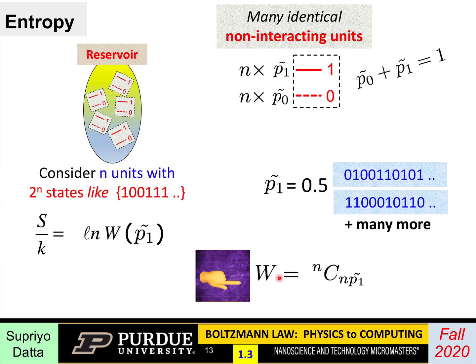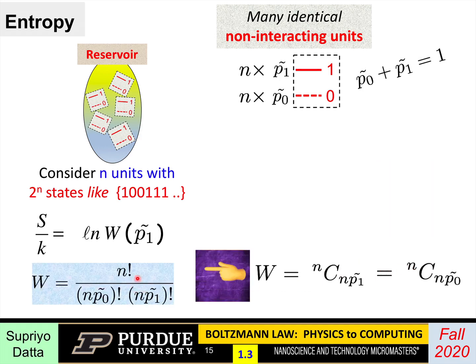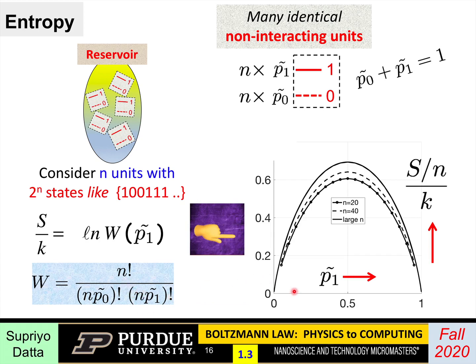Now mathematically, I could write W as n choose np1, because the idea is I've got n units. In how many ways can I choose np1 units that will be 1? And this is also equal to n choose np0. In how many ways can I choose np0 units that will be 0? And those are actually mathematically equal. And you could write W as factorial n divided by factorial np0 times factorial np1. And this is the elementary combinatorial law that you have probably seen or you could look it up easily.